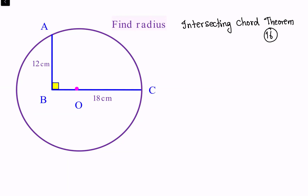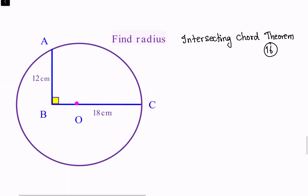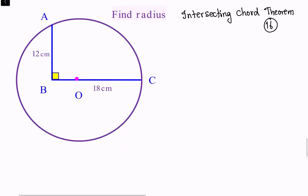Here what we are doing is we'll complete BC so that BC intersects the circle at point D. Also AB will be extended so that AB meets the circle at point E. Now chord AE and chord DC are intersecting.